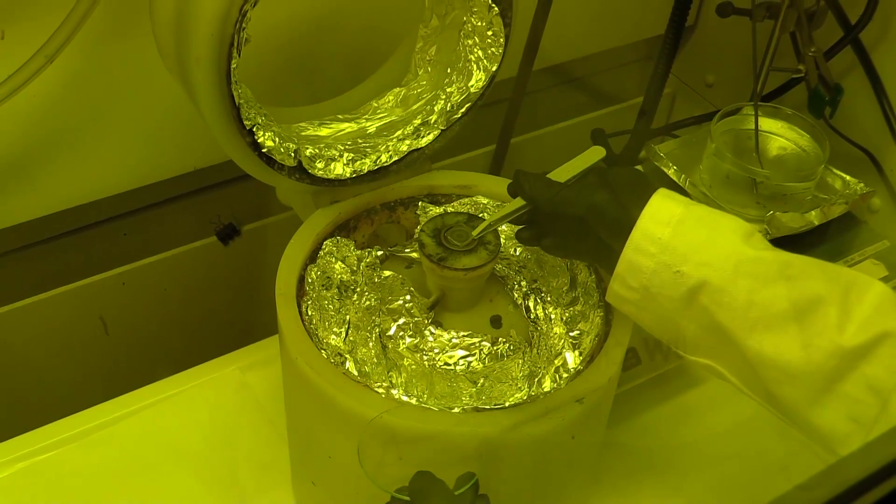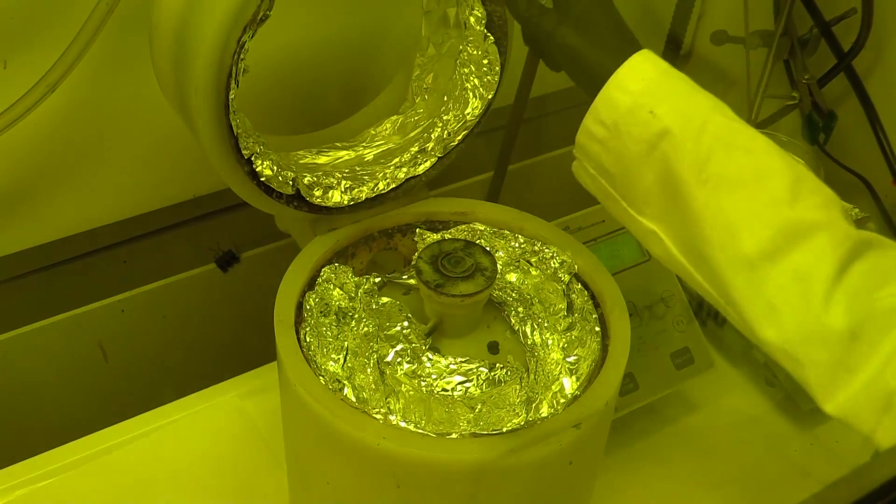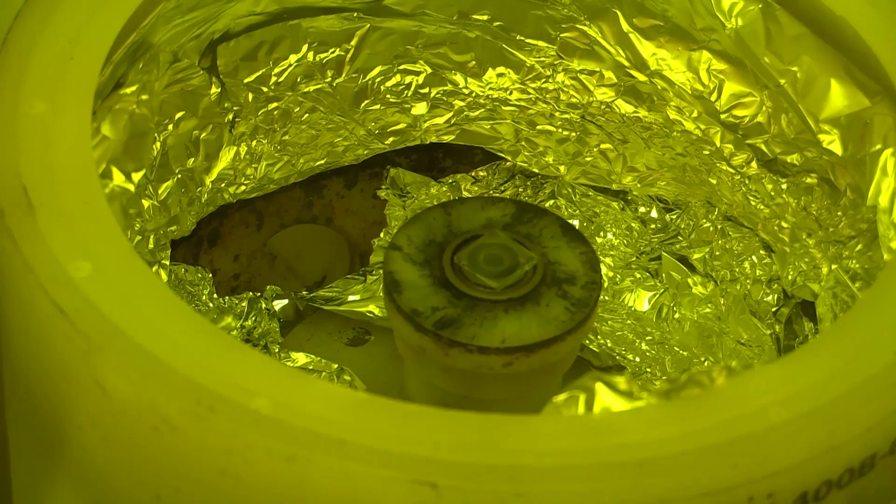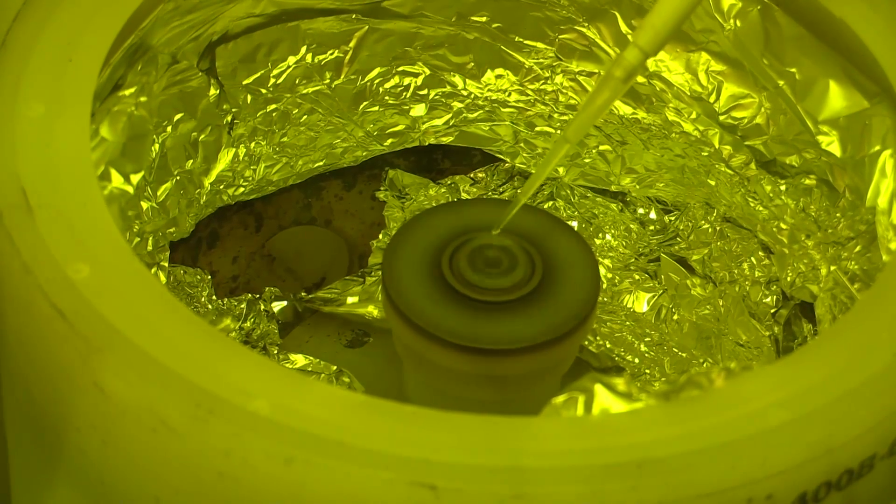Now we're going to spin coat the TiO2 precursor solution. We drop 60 microliters of the precursor solution onto the substrate and spin coat at 3,500 RPM for one minute to form a thin film.